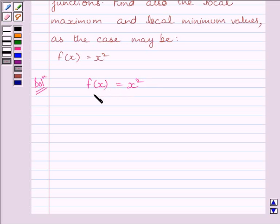Now, differentiating both sides with respect to x, we get f'(x) equal to 2x. Now, to find the points of maxima and minima, we will put f'(x) equal to 0.